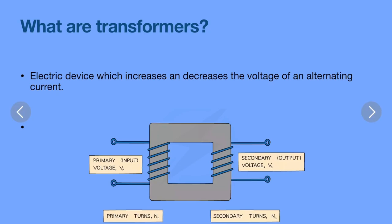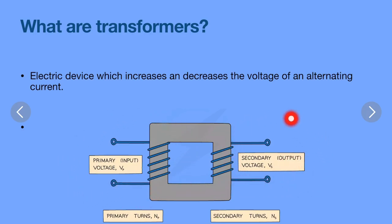Here is the primary input — this part is the primary input voltage, and this part is the secondary output voltage. Then there are primary turns and secondary turns.